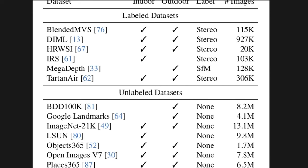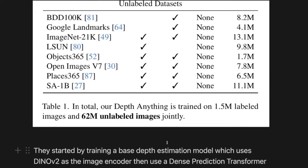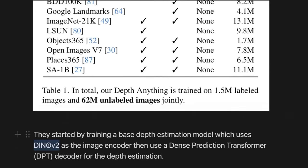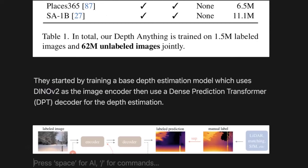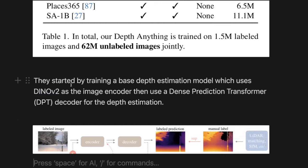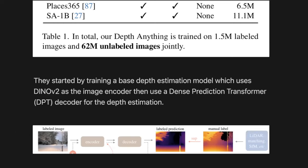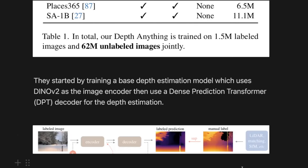The first thing they do is train a base depth estimation model, which uses a DINOv2 model as the image encoder and what's called a Dense Prediction Transformer as the decoder. This is your standard encoder-to-decoder model, where you could probably swap in a plethora of models for the encoder and decoder. They just happen to use DINOv2 and this DPT in their case. In the first round, they train the supervised version where they have actual ground truth from LiDAR, stereo matching, or structure from motion.